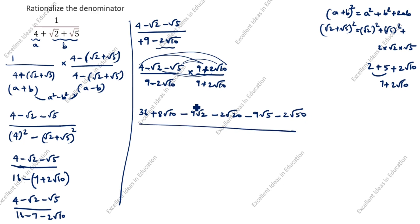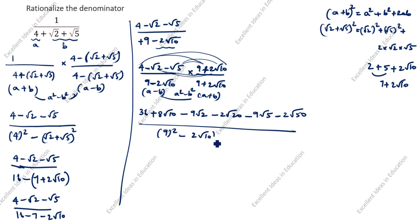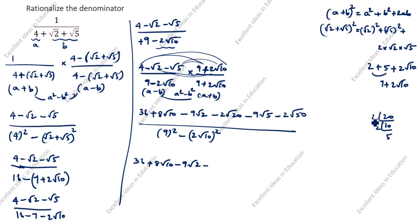The denominator is A minus B into A plus B, which gives A square minus B square. A is 9 and B is 2 root 10, so A square is 9 square which is 81, and B square is 2 root 10 the whole square. We split 2 root 10 whole square: 2 squared is 4 and root 10 squared is 10, so 4 into 10 is 40. The denominator becomes 81 minus 40, which is 41. Now for the numerator, we simplify root 20: 20 equals 2 times 2 times 5, so root 20 is 2 root 5.